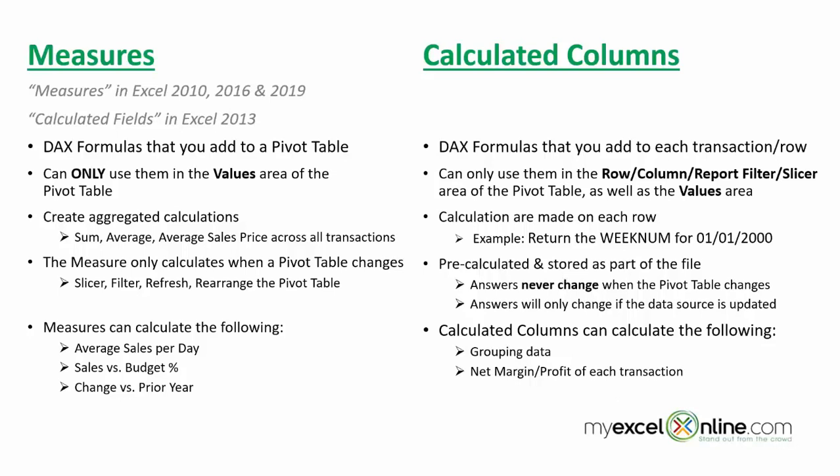The values never change when the pivot table changes. So if you put your calculated column inside a pivot table and use slicers to choose different dates — 2010, 2011, 2012 — the values will not change. The calculated column will not change because they are stamped in, so they're not very useful dynamically inside a pivot table.